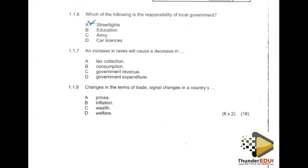It is important for the government to charge taxes because tax helps to redistribute income from those who have a lot of wealth towards those who are poor. The government taxes wealthy people and then gives to the poor — mostly via capital transfers or social grants. A grant is money that you receive without any job being done or any service being rendered.